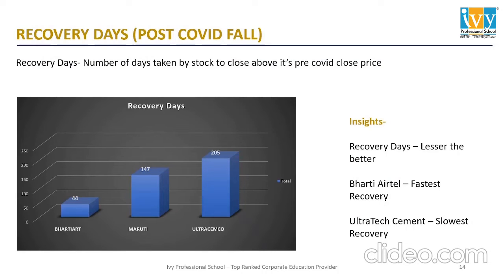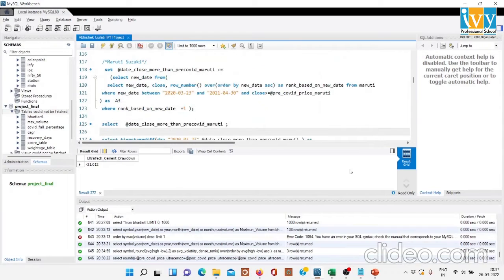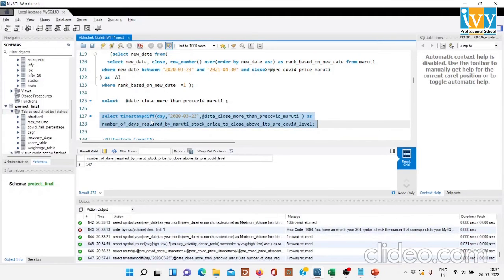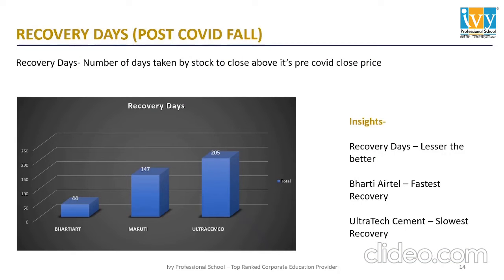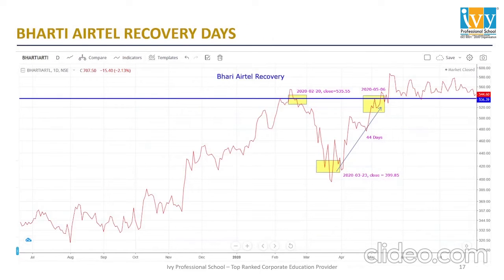The next parameter is recovery days — the number of days taken by a stock to close above its pre-COVID close price. Bharti Airtel took 44 days, Maruti Suzuki took 147 days, and Ultratech Cement took 305 days to reach above its pre-COVID price. The insight is: recovery days lower is better, as it shows you are able to recover quickly. Bharti Airtel has the fastest recovery and Ultratech Cement has the slowest. We can see this on the charts for each company during that timeframe.